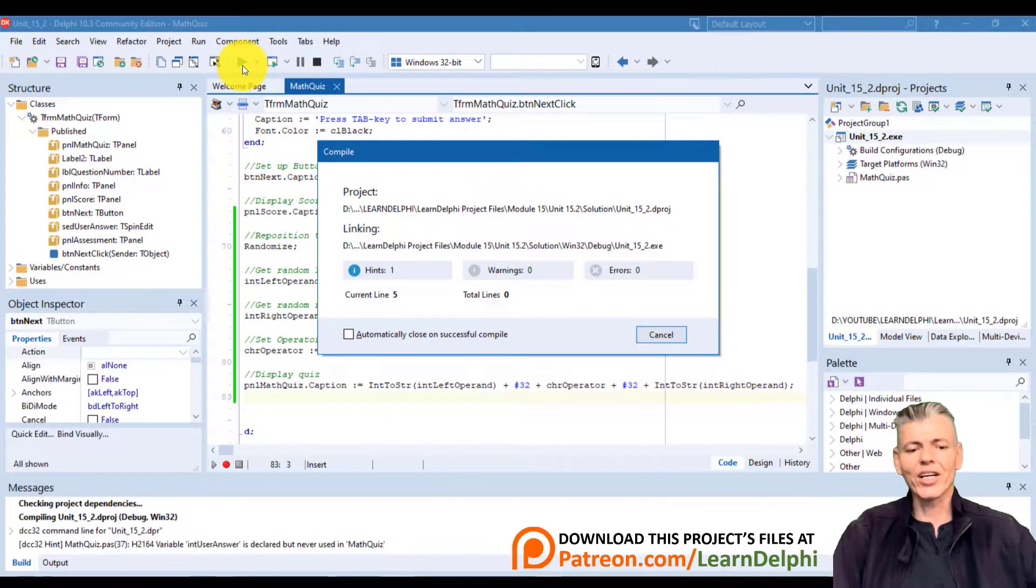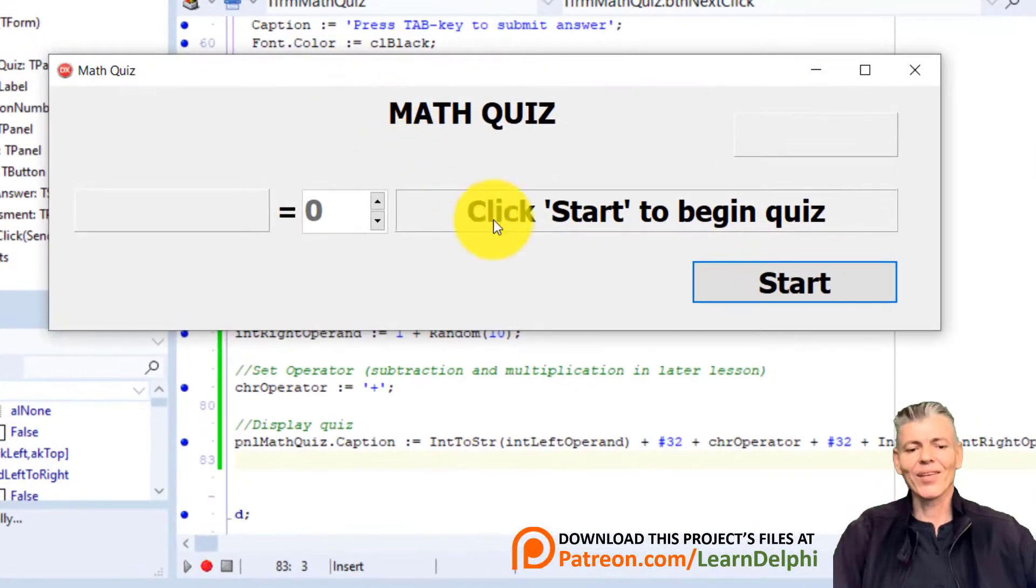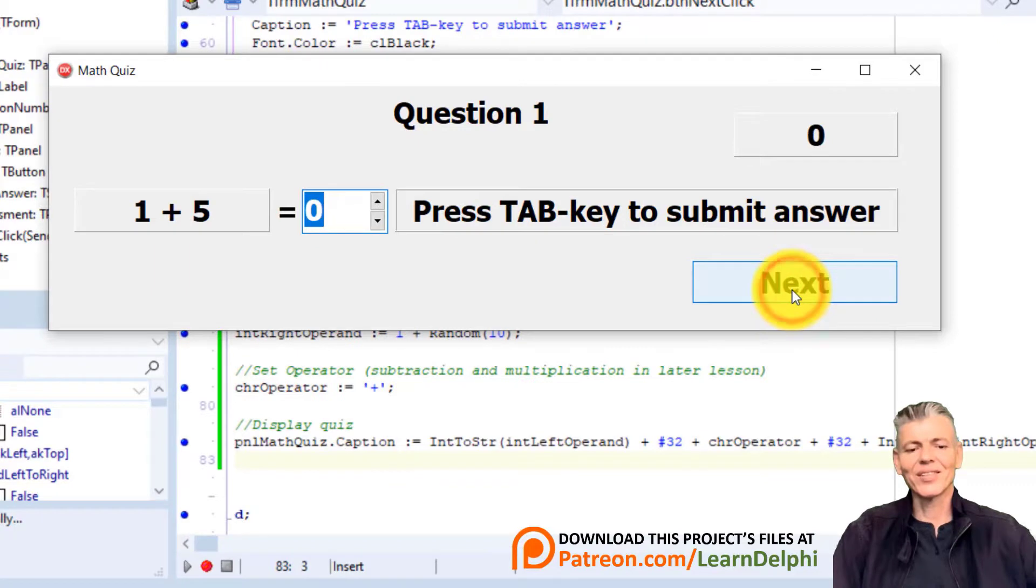After that we concatenate another space. Then we also concatenate the random number in intRightOperand, after also converting it to a string. The whole lot is then assigned to the caption of pnlMathQuiz. Let's see how it looks. Run the project. Click start. This panel shows the random math question. Click the button again. And again. That looks perfect. Close the form.